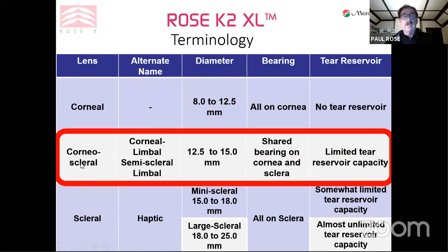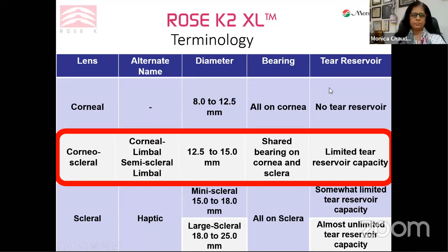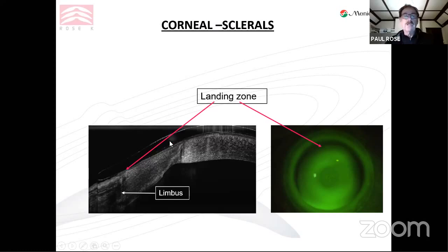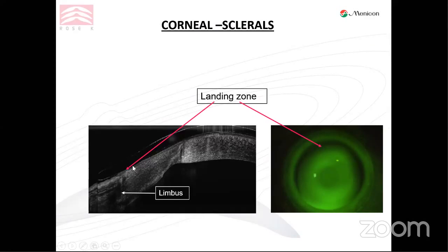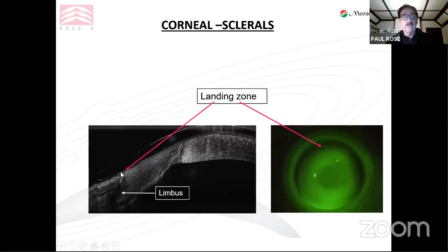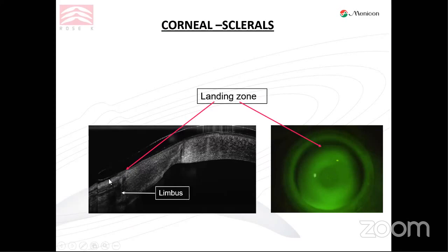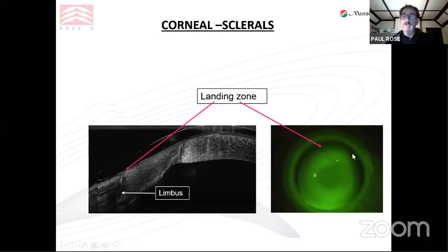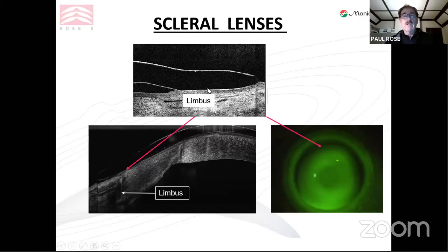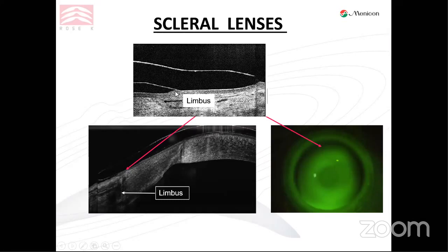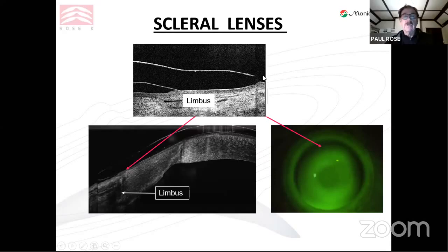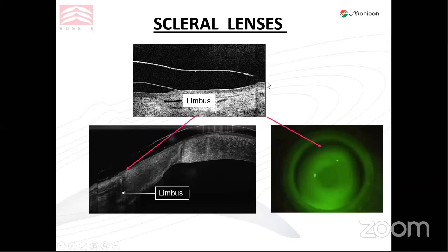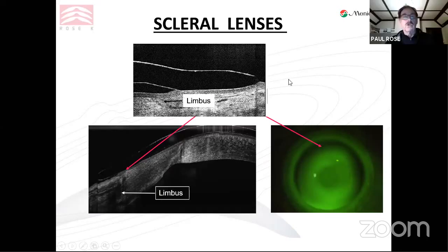My design, Excel, is a corneal scleral lens with most of the bearing on the cornea. From this OCT image, you can see the lens lands nicely inside the limbus, clears the limbus very slightly, and then moves out to give edge lift — very similar to a corneal lens. From the fluorescent pattern, the landing zone is inside the limbus on the cornea. With the scleral lens, you can see the conjunctival epithelial cells trapped underneath the lens, which can cause issues. A very good fitting scleral lens tries to land the foot of the lens parallel to the sclera.